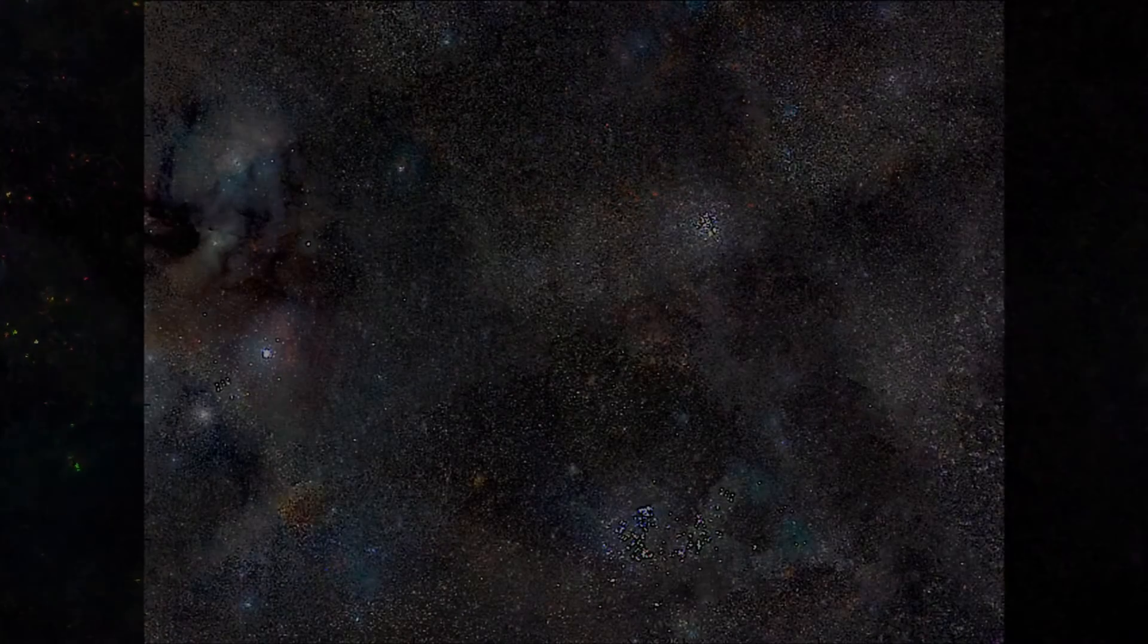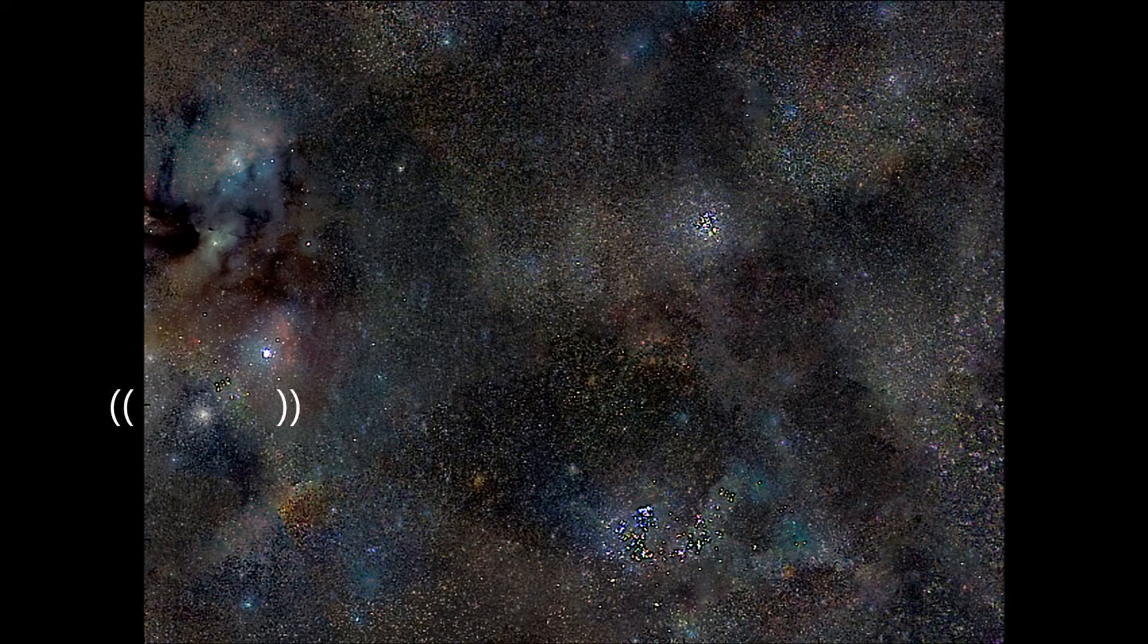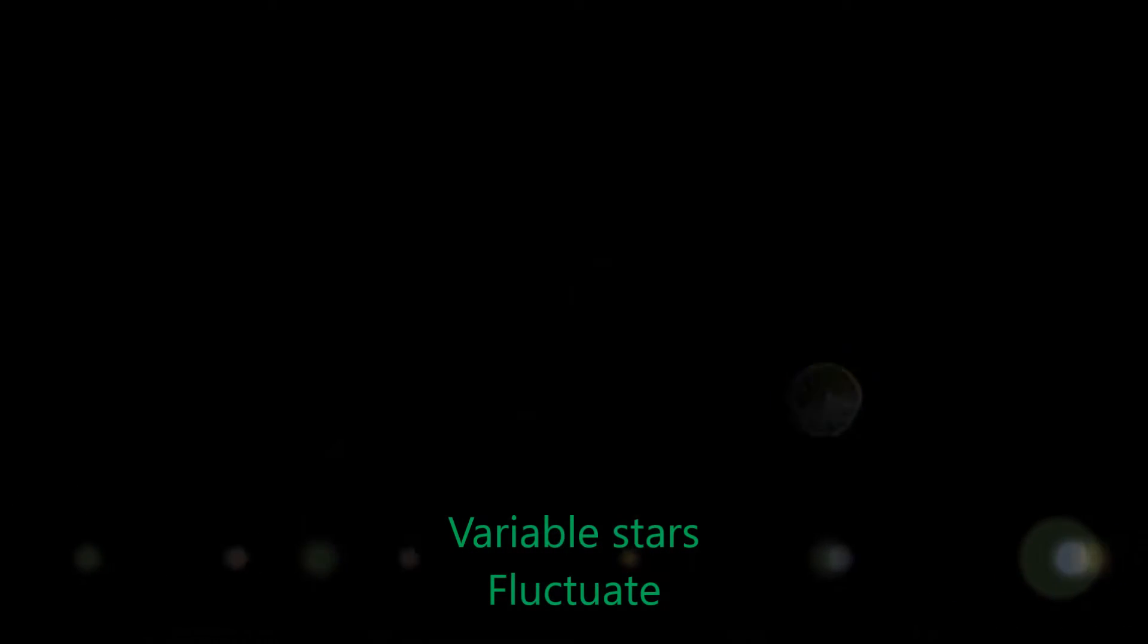Inside of M4 globular cluster, there are 43 variable stars that were observed. What exactly is a variable star? A variable star is a star that fluctuates. It glitters. So when you're looking up at Messier 4, you can see it twinkle.